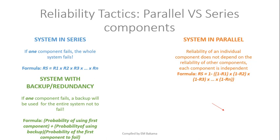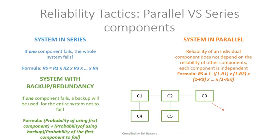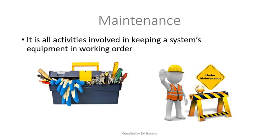The formula for the mixed system is more complex and will be covered with calculations in the next video. To identify a backup or redundant system: say we have components C1, C2, C3 as main components, and C4 and C5 as backups — C4 backs up C1 and C5 backs up C2. If C1 doesn't work, we use C4 with C2 and C3. The main components are those linked in a chain on the same line, while backup components like C4 and C5 sit below with no direct link between them.